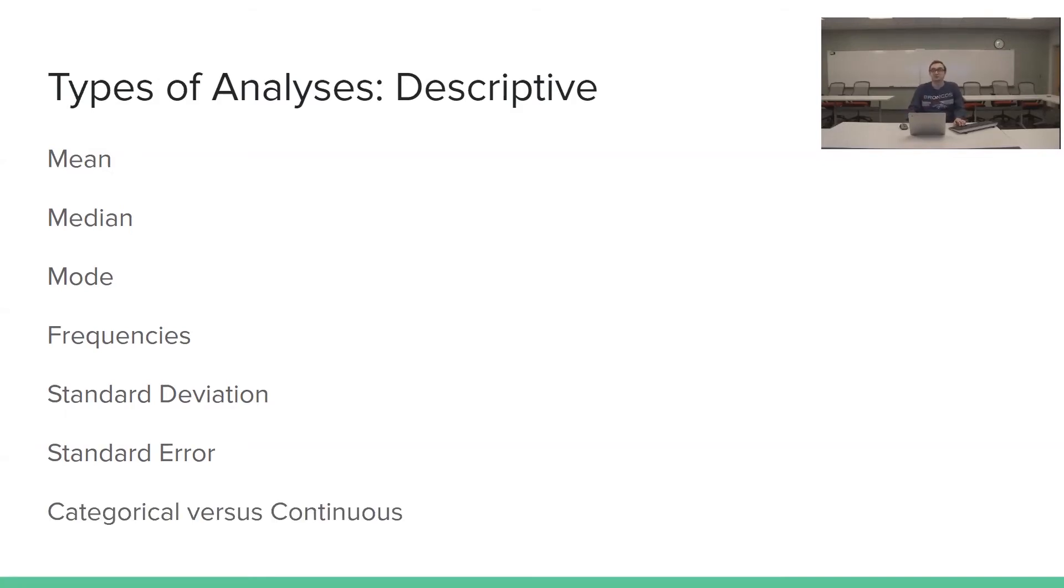One last note to make in these types of analyses is this difference between categorical and continuous data. So categorical data is data that fits directly into categories. It's not necessarily an infinite range of numbers. So a good example of categorical data might be gender, for example. There are a few select categories that you can go into. Whereas continuous is going to be a set number, a range, a large range. So age would be an example of a continuous variable because you can answer at any point along the scale.